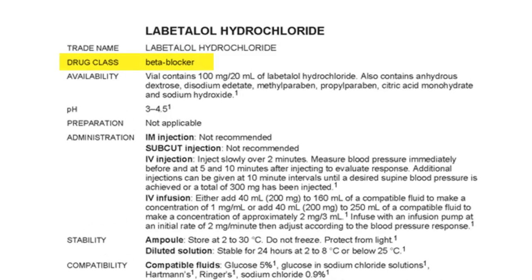'Drug class' is a description of the therapeutic category of the medicine. In labetalol's case, it is a beta blocker. 'Availability' lists all the strengths of the medicine available in Australia. We also list all the ingredients. All liquids are listed as the total amount of medicine per total volume of the vial, syringe, or bottle.